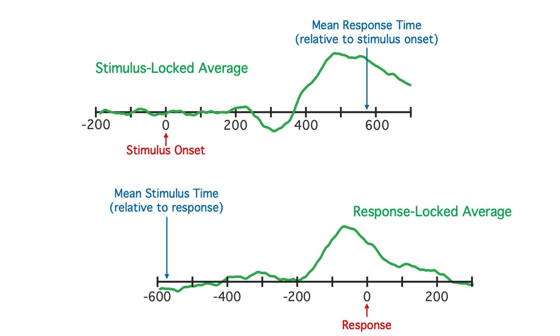If the response time were 570 milliseconds on every trial, the response-locked average would be identical to the stimulus-locked average, but shifted over by 576 milliseconds.